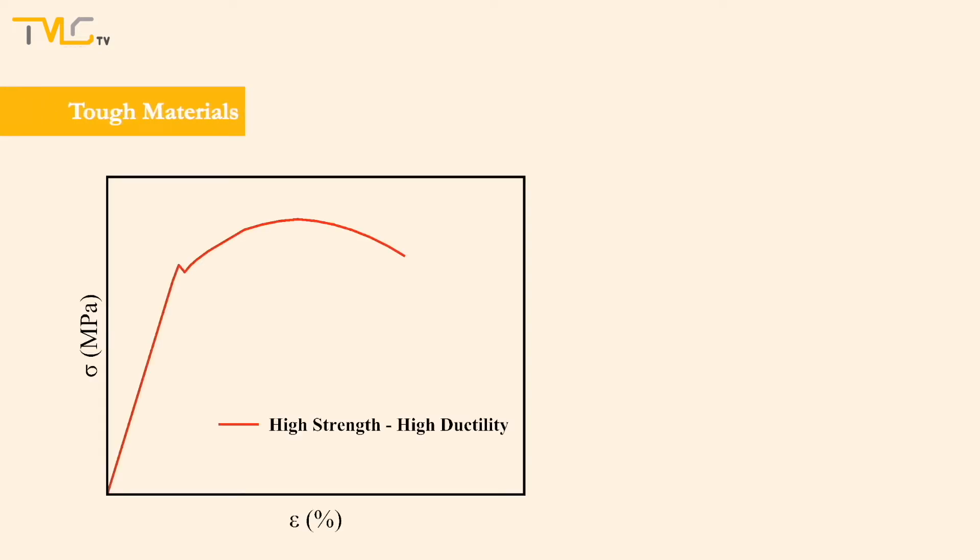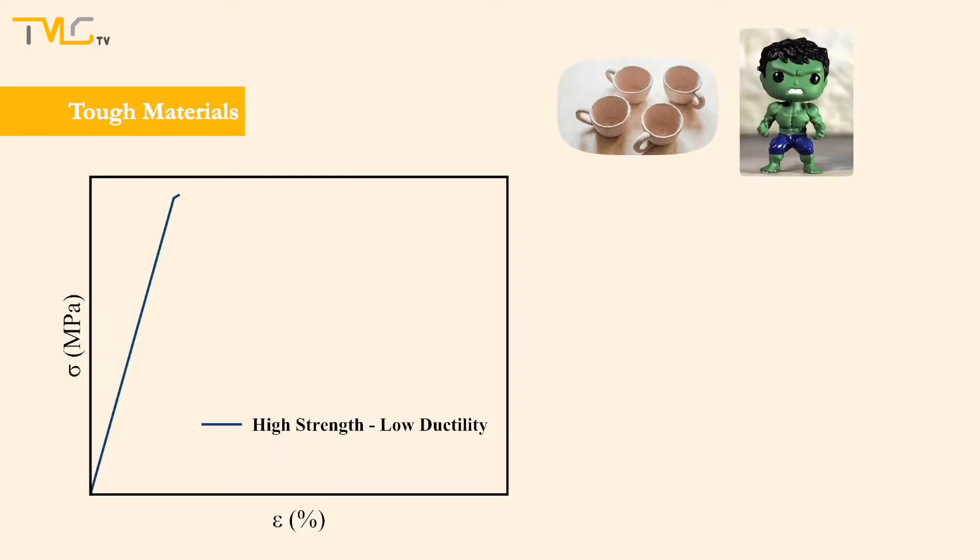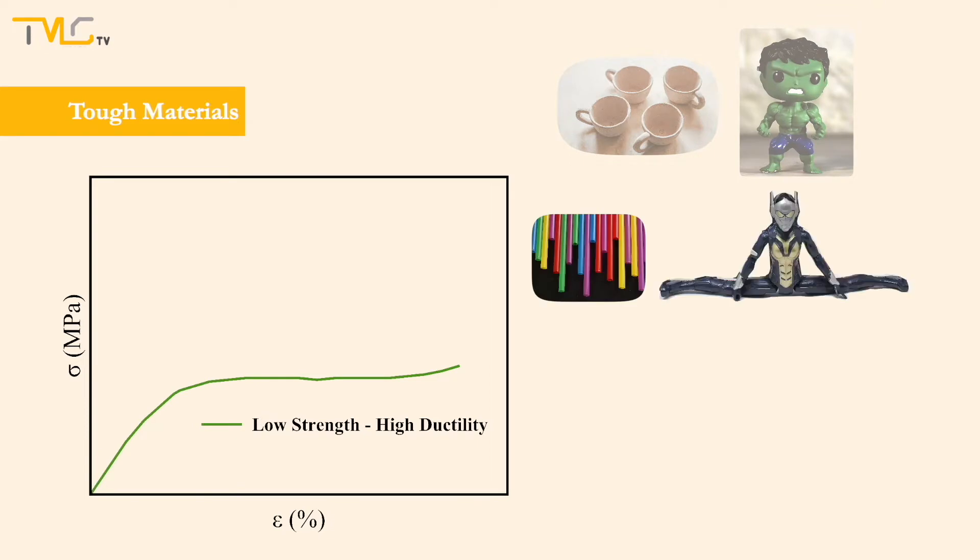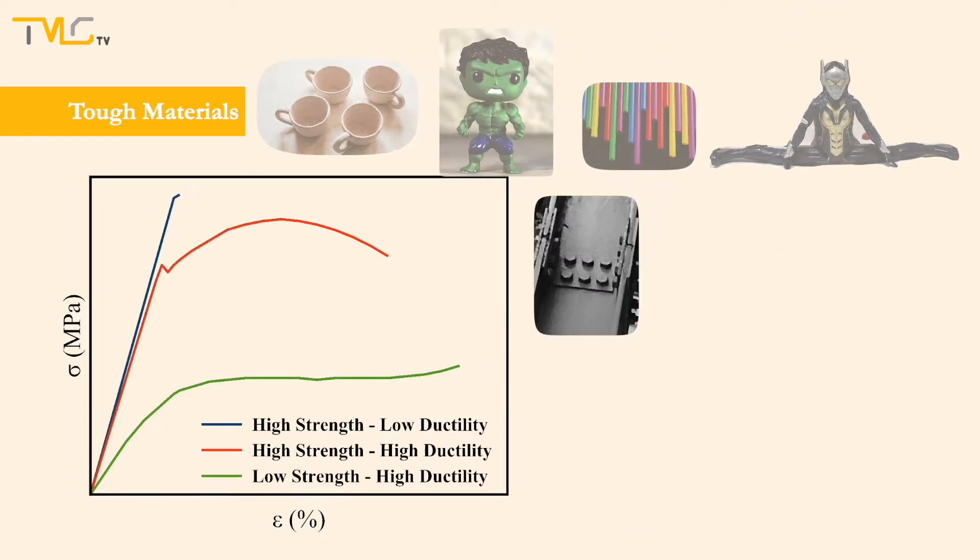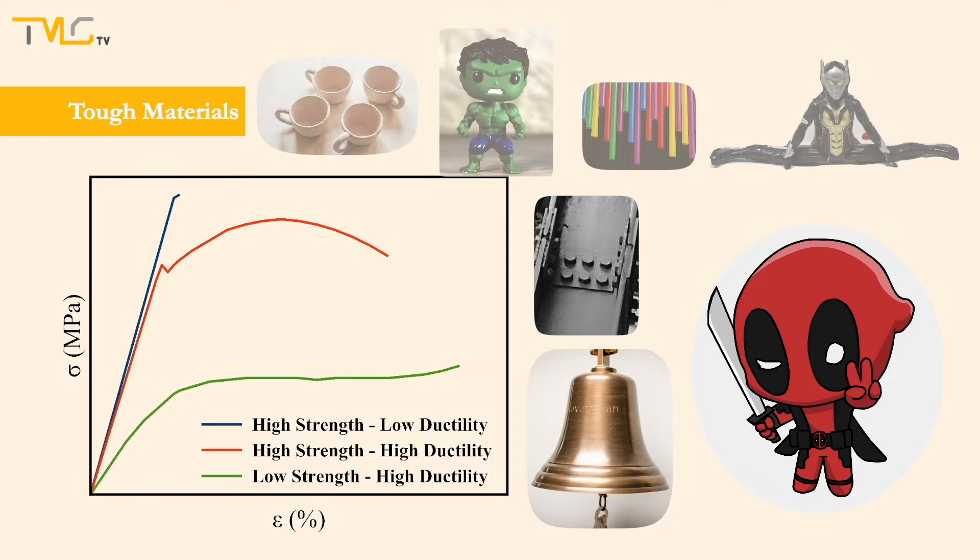A material is classified as tough if and only if it shows both high strength and ductility. Hence, most ceramics show high strength but low ductility, and most polymers show high ductility but low strength. As a result, they are not classified as tough materials. Most of the metals and alloys, on the other hand, satisfy both of these requirements and are classified as tough materials.